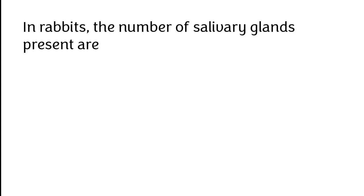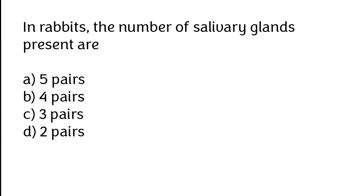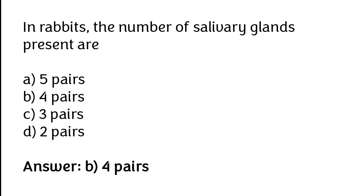In rabbits, the number of salivary gland pairs present are: A) 5 pairs, B) 4 pairs, C) 3 pairs, D) 2 pairs. The correct answer is option B — 4 pairs.